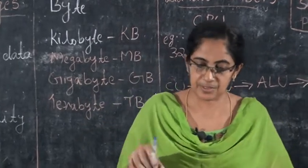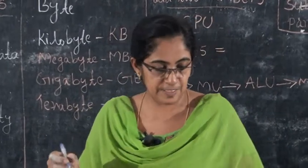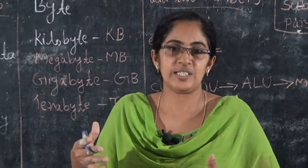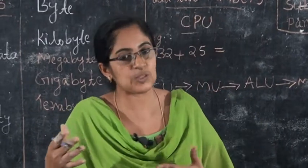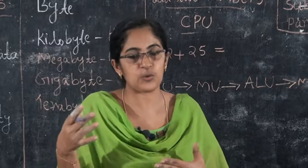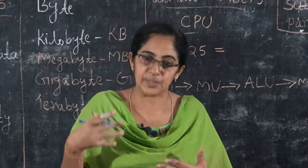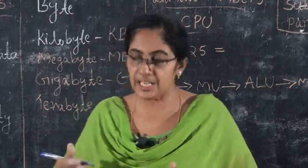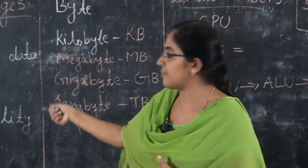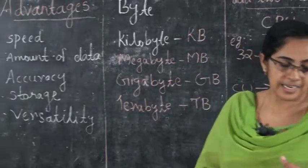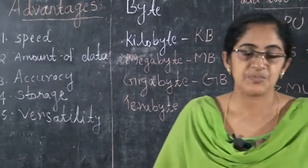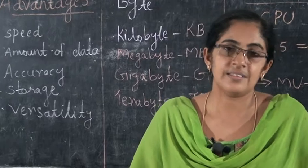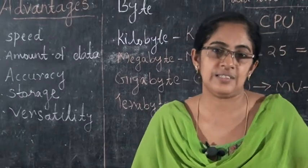To recap today's class: monitor output is called soft copy, printer output is called hard copy. There are five advantages and three disadvantages of a computer. Okay children, take care — class is over.